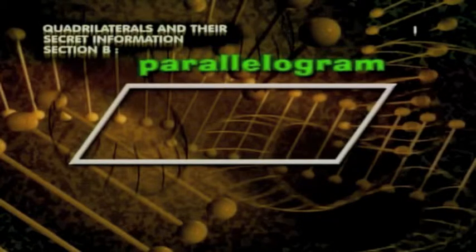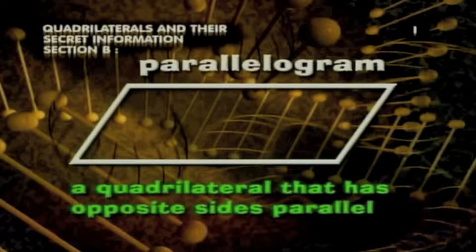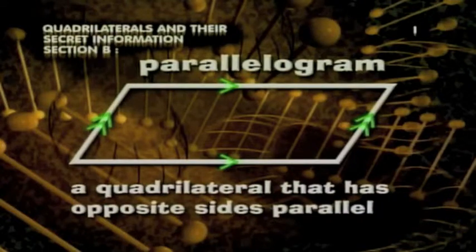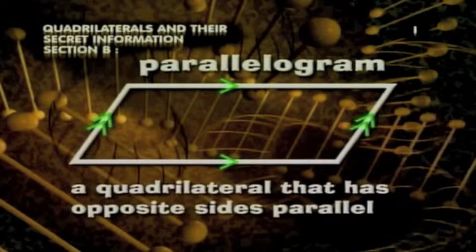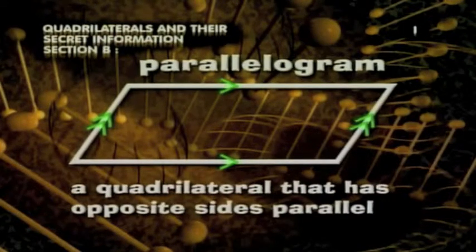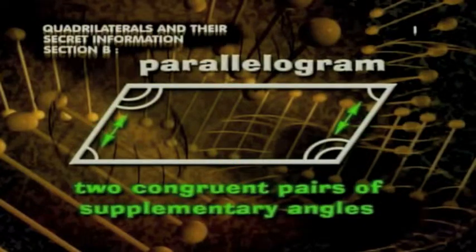A parallelogram is a quadrilateral that has opposite sides parallel. Now, its angles are no longer right angles, but its opposite sides are all still parallel. It also has two congruent pairs of supplementary angles.